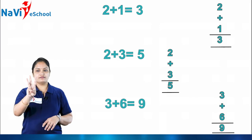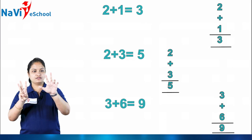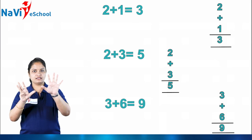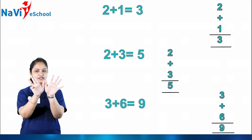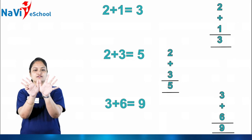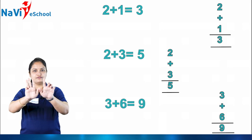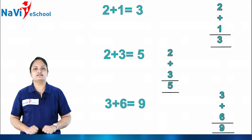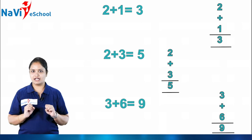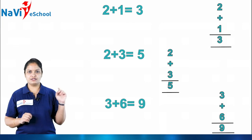Next we have three plus six. Here I have three, and then I have to make six — one, two, three, four, five, six. So three plus six gives you how much together? One, two, three, four, five, six, seven, eight, nine. So totally here we have nine. You can do this vertically or horizontally as I am showing you here.